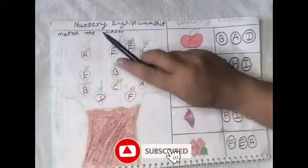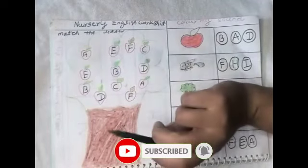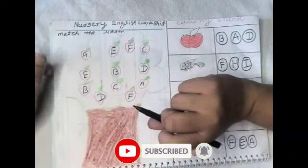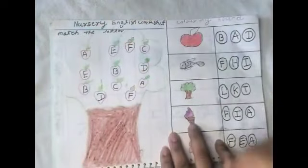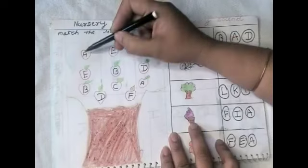Today we are learning nursery English worksheet. Match the letters. A, where is A? A.